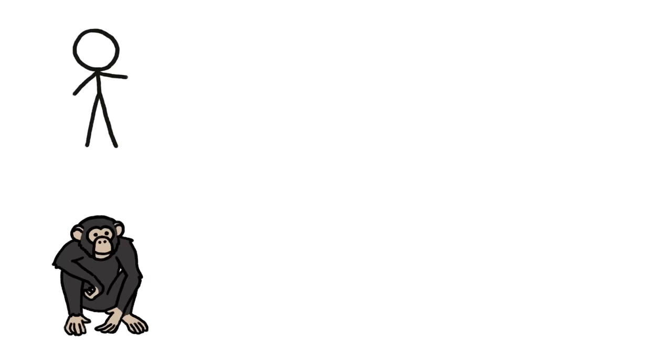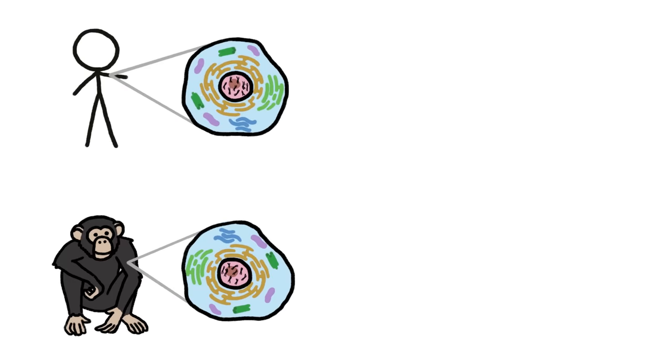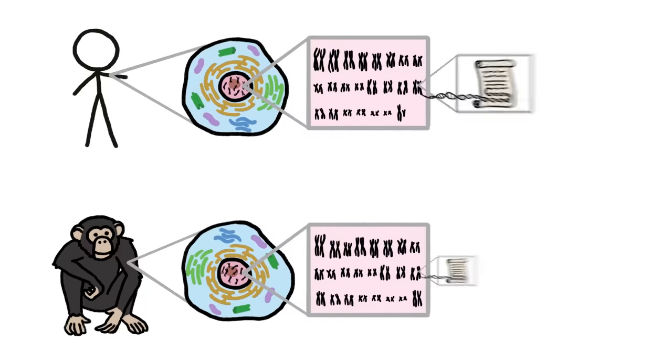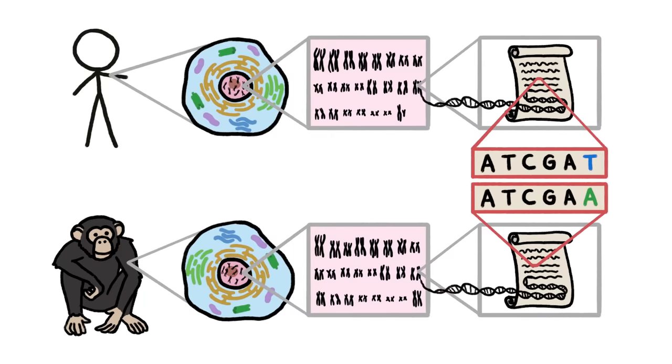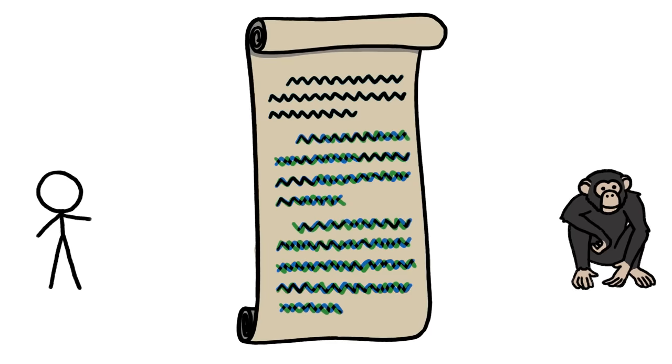Taken literally, those numbers make it sound like we could pluck one cell from a chimp and one from a human, pull out the tangled bundles of DNA known as chromosomes, unroll each one like a scroll, and read off two nearly identical strings of letters. But in reality, the human and chimp scrolls don't sync up so easily.